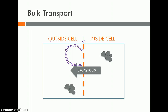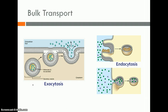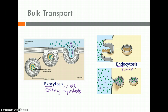Exocytosis is releasing or exiting — disposing of waste from the cell or products the cell produces. You can see particles get closer and closer, then fuse with the cell membrane and release their contents out. Endocytosis, on the other hand, is like a cell eating large quantities — the cell membrane engulfs particles into a little vesicle and releases the contents wherever needed in the cell. Endo and exo involve big, big molecules being transported.